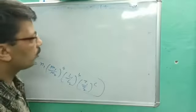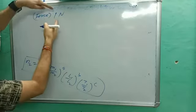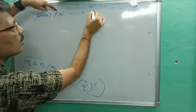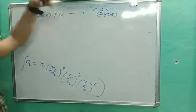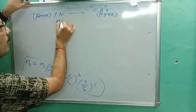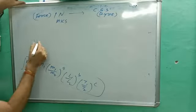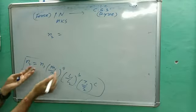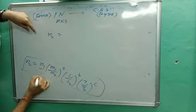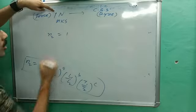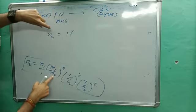Now the question: convert 1 newton of force into the CGS system, which is dyne. We are converting MKS to CGS using the formula n2 = n1 × (M1/M2)^a × (L1/L2)^b × (T1/T2)^c. Since 1 newton is given, n1 = 1.